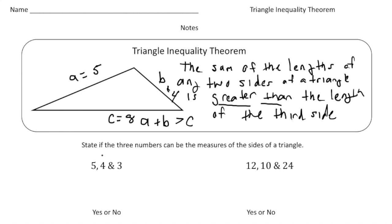So now that you know the rule, let's try these two problems. So it says state if the three numbers can be the measures of the sides of a triangle.